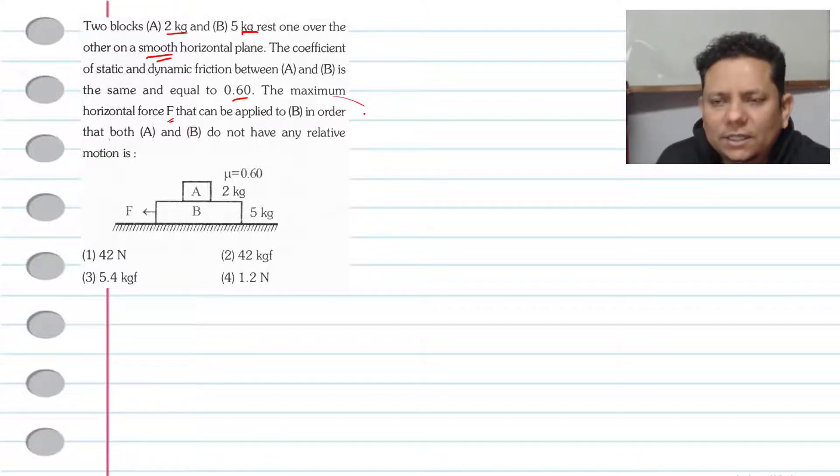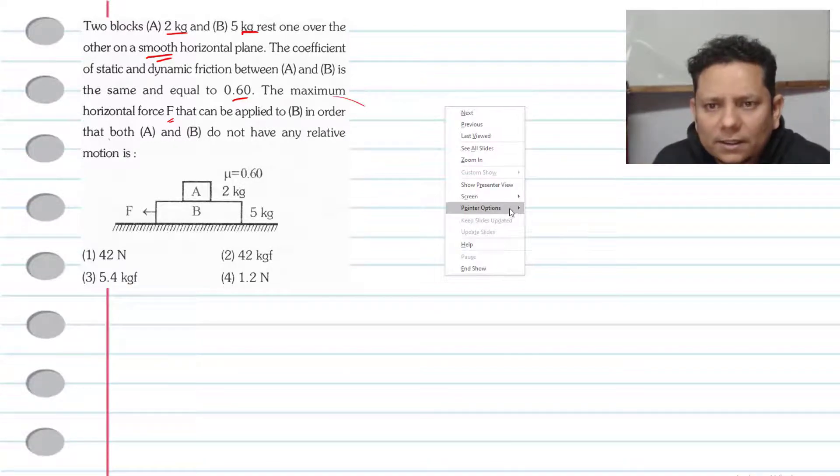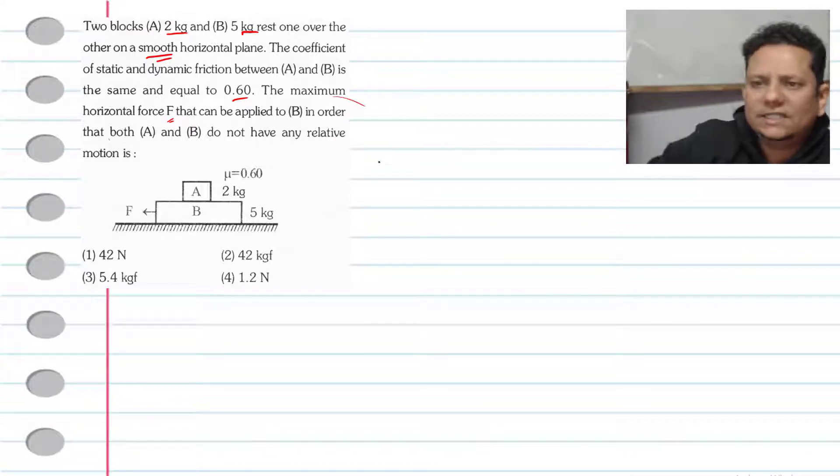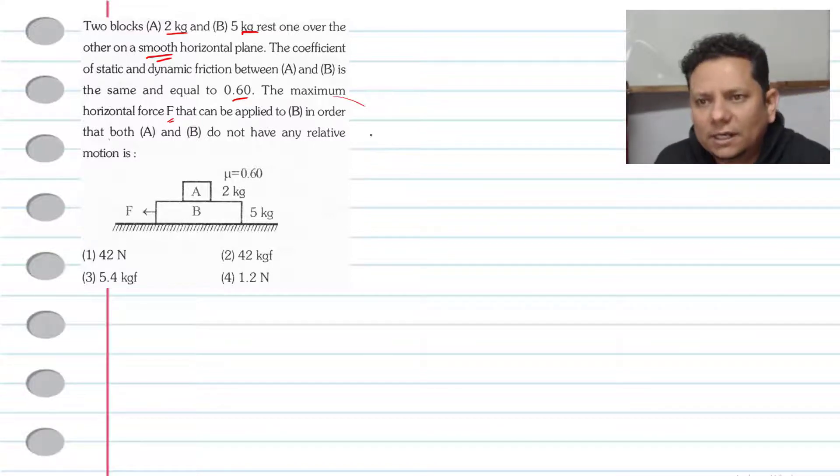In friction theory, the first step is to calculate Fs maximum between A and B. This will be μ times N, which is mg. So this equals 0.6 multiplied by 2 multiplied by 10, which gives us 12 newton force. This is the maximum friction Fs max. Fs max 2 will be 0 because the table is smooth.